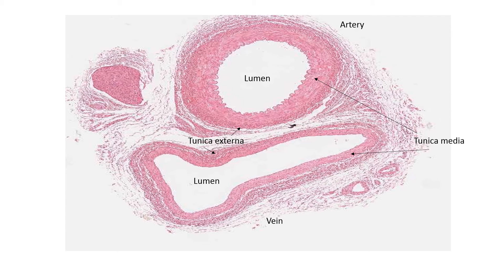Finally, although it's not the most obvious because it's very thin — a single layer of cells — is the tunica intima, also known as the endothelium. It's a smooth layer of cells to reduce friction.